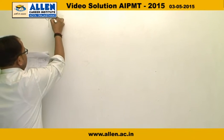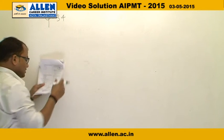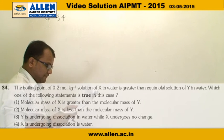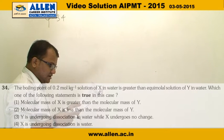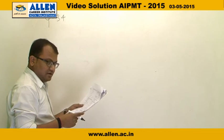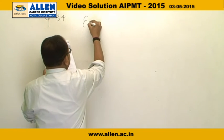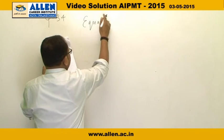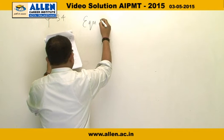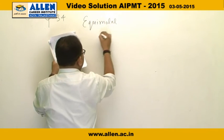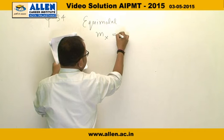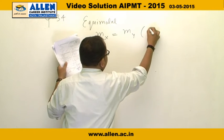Question number 34: The boiling point of 0.2 molal solution of x in water is greater than equimolal solution of y. This means molality of x equals molality of y, as given in the question.